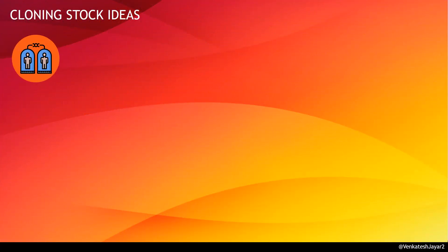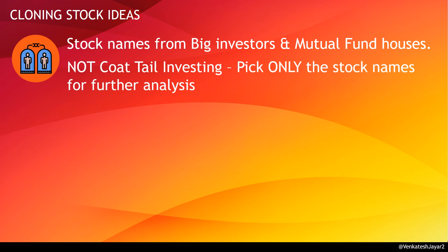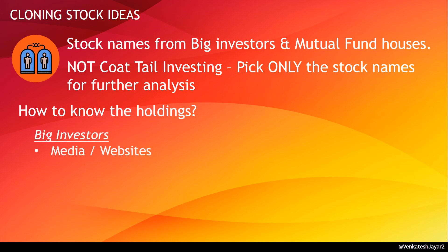In this approach, investors pick ideas or stock names in which other big investors and mutual fund houses have invested. This does not relate to coattail investing, where investors blindly buy stocks that other investors have invested in. However, in this approach, investors only pick the initial stock names from these big investors or mutual funds. Then the investor does further analysis before making an investment decision. Where can an investor get the holdings of these investors or mutual funds? In case of big investors, it would be discussed in media and can be seen on some websites.